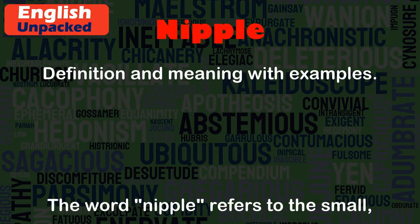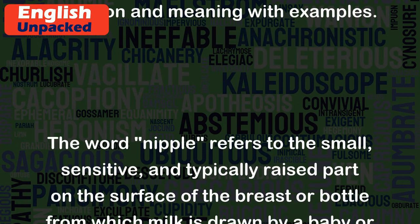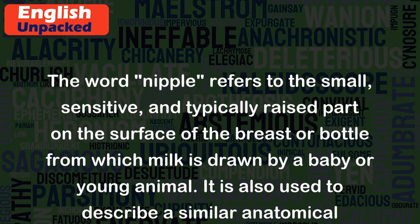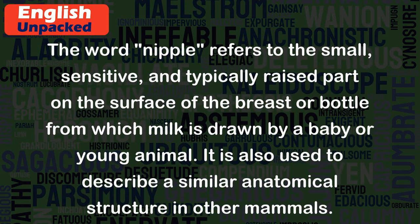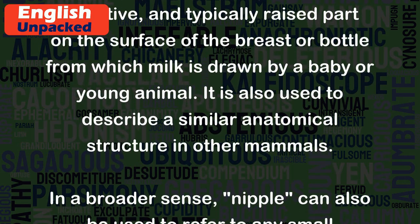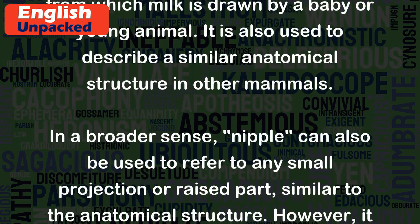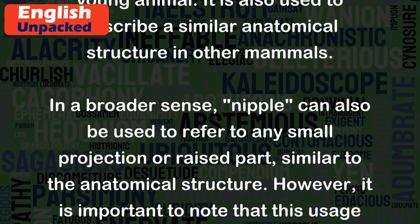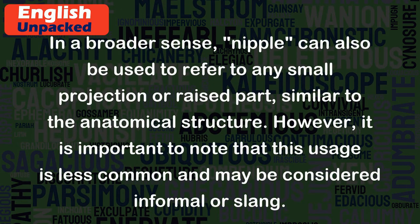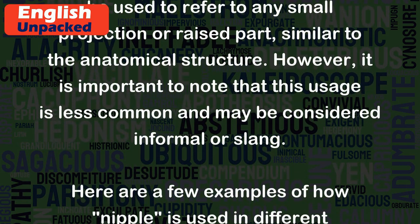Nipple. The word nipple refers to the small, sensitive, and typically raised part on the surface of the breast or bottle from which milk is drawn by a baby or young animal. It is also used to describe a similar anatomical structure in other mammals. In a broader sense, nipple can also be used to refer to any small projection or raised part, similar to the anatomical structure.